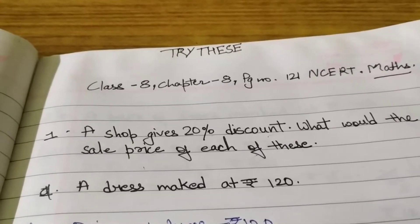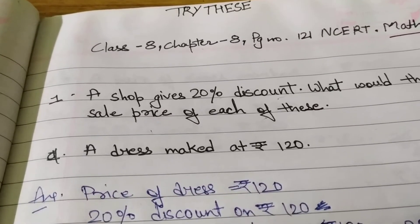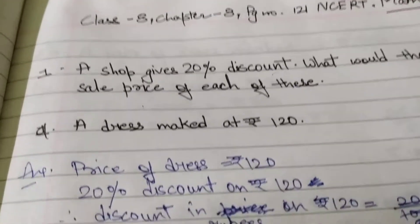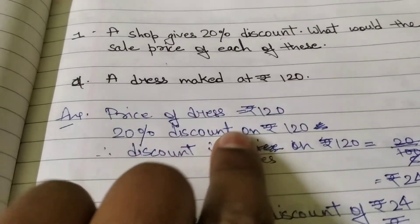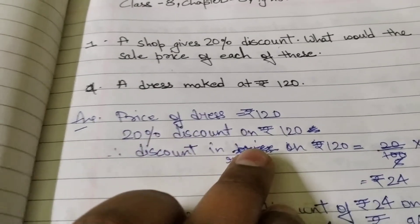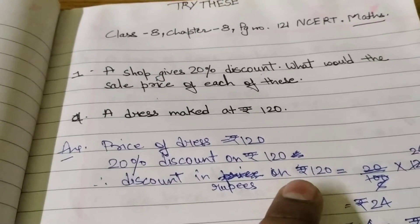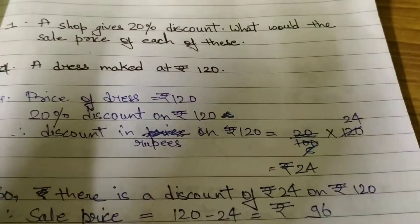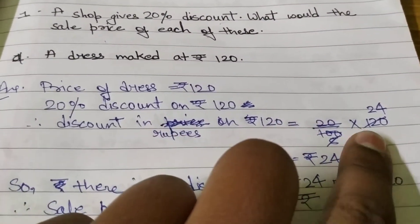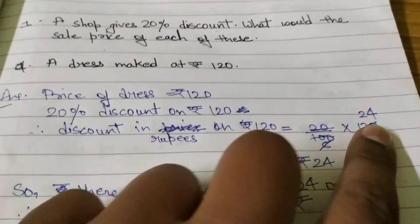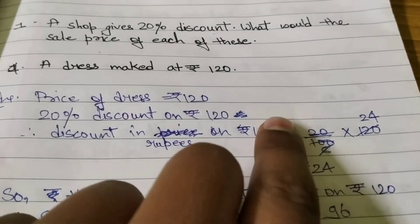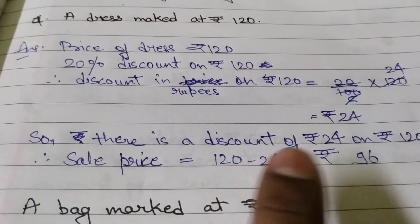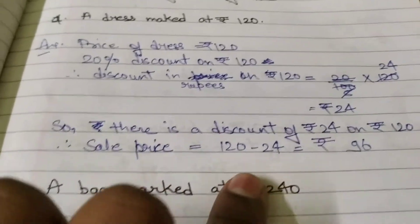Part A: a dress marked at rupees 120 with a 20% discount. First, the marked price of the dress is rupees 120. It has 20% discount. Discount in rupees equals 20% multiplied by 120, which is 20 over 100 multiplied by 120. So our discount is rupees 24.